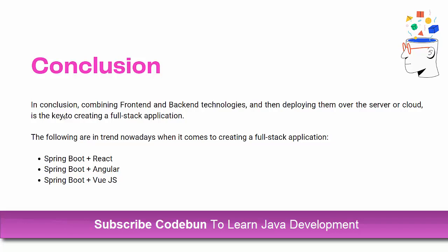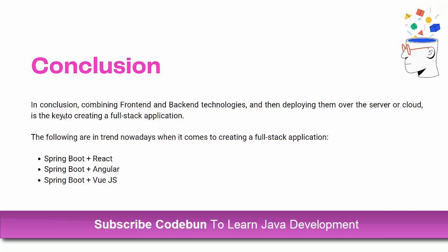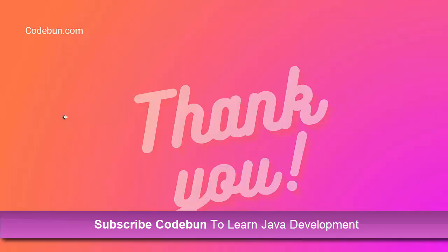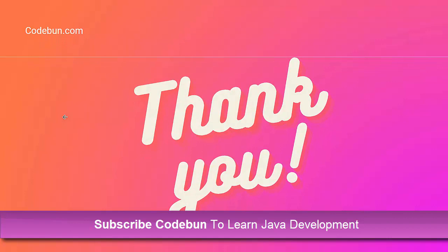To conclude: to become a full-stack Java developer you should have knowledge of Spring Boot, Hibernate, and React.js, Angular.js, or Vue.js. Spring Boot is the most commonly used tool in the industry. To handle database transactions you should know Hibernate or JPA. Thank you for watching. If you have any questions related to Java, put them in the comments and we'll try to create a new video explaining the topic.